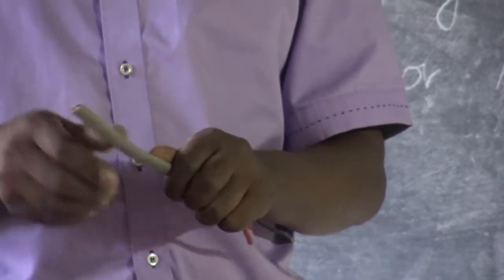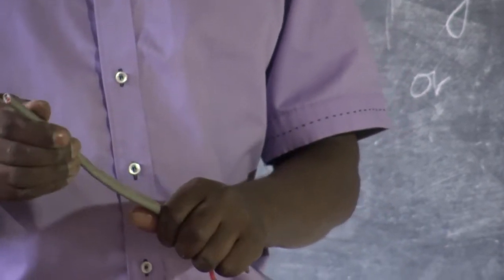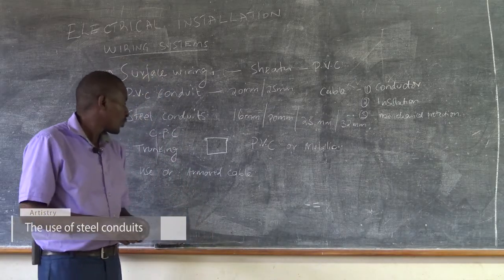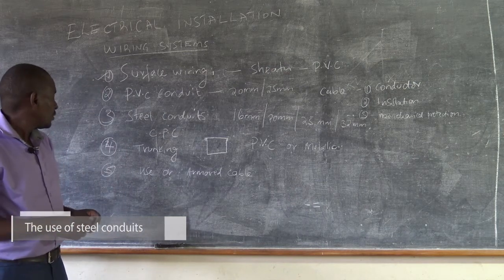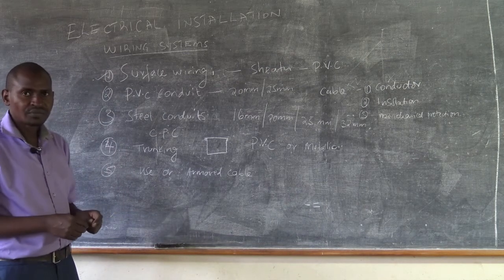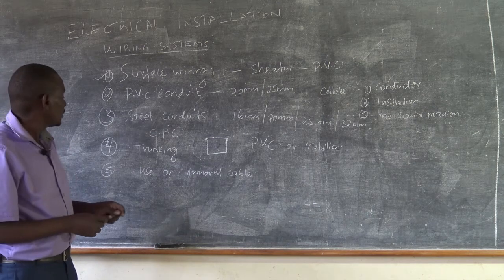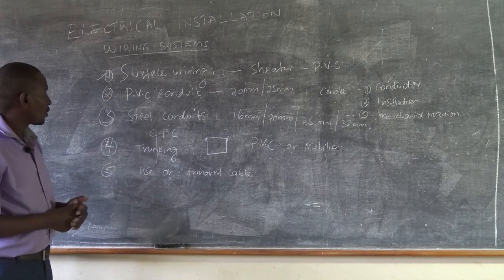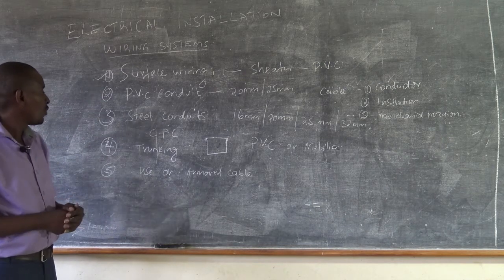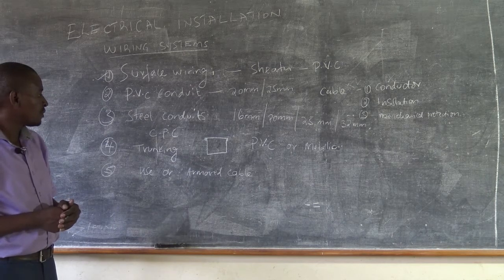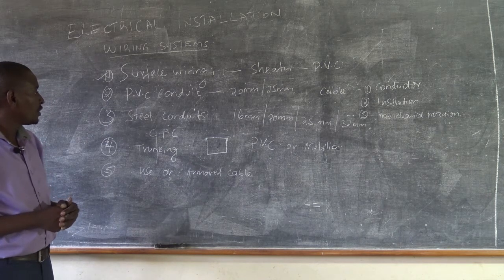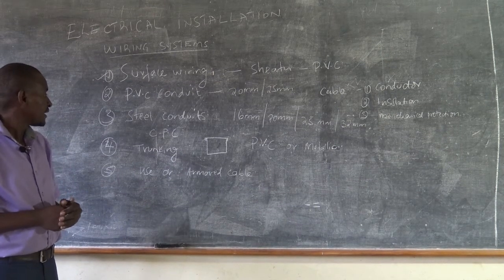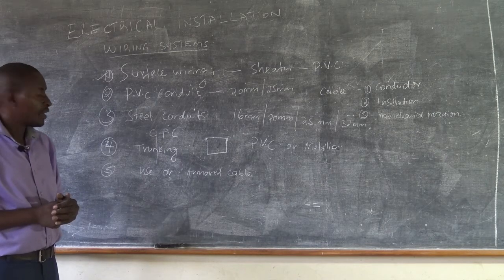It's not possible to easily eject the conductors inside the inner sheath that we have. In summary, we say that these are the five common types of wiring systems that are normally used, both in the domestic and in the industrial setup for protecting the cables.